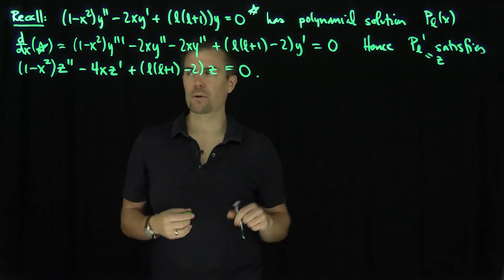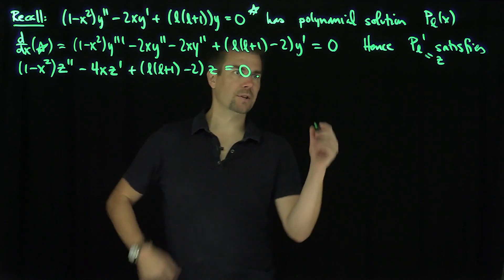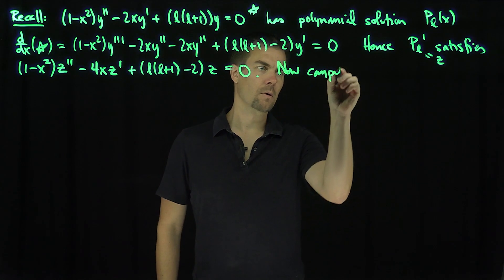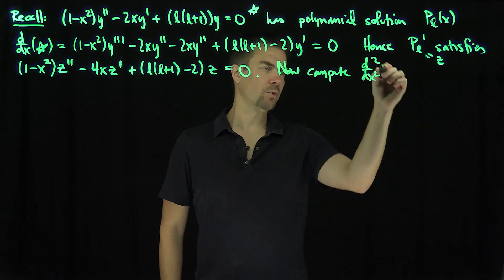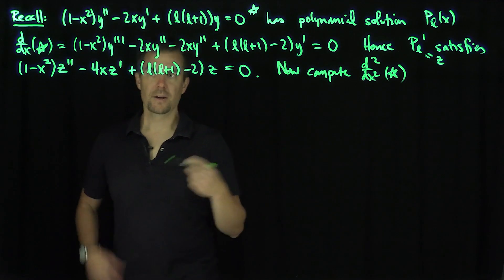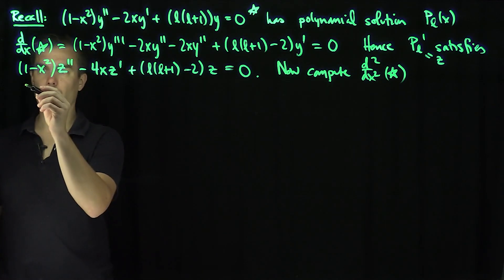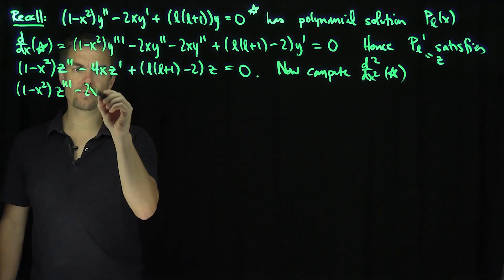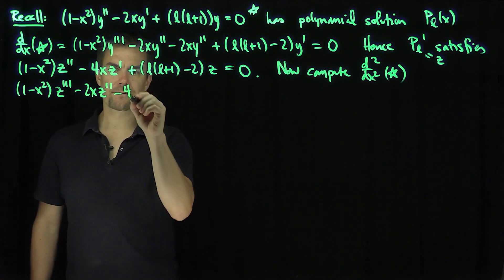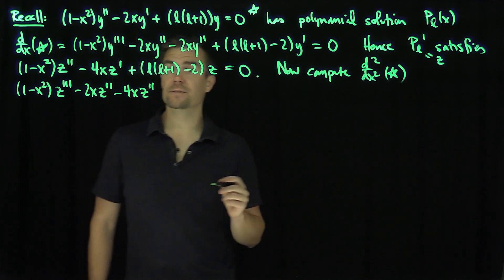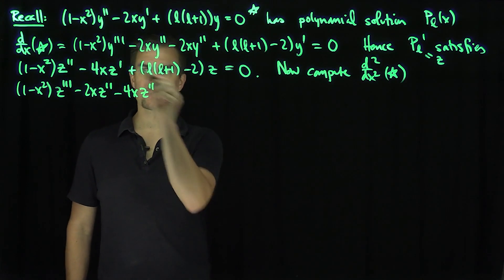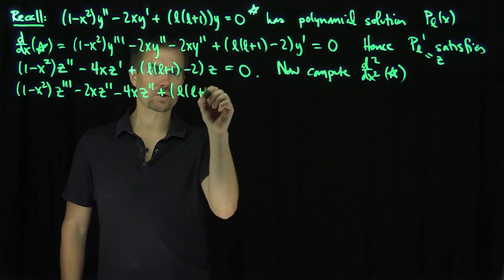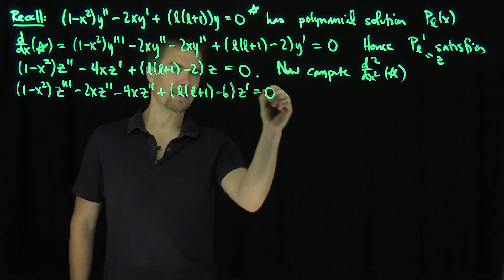Let's do one more example to see the general structure. If we differentiate again, computing d²/dx² of equation (★), we get (1 - x²)z''' - 2xz'' - 4xz'' - 4z', so combining: plus l(l+1) - 6 times z', equals 0.